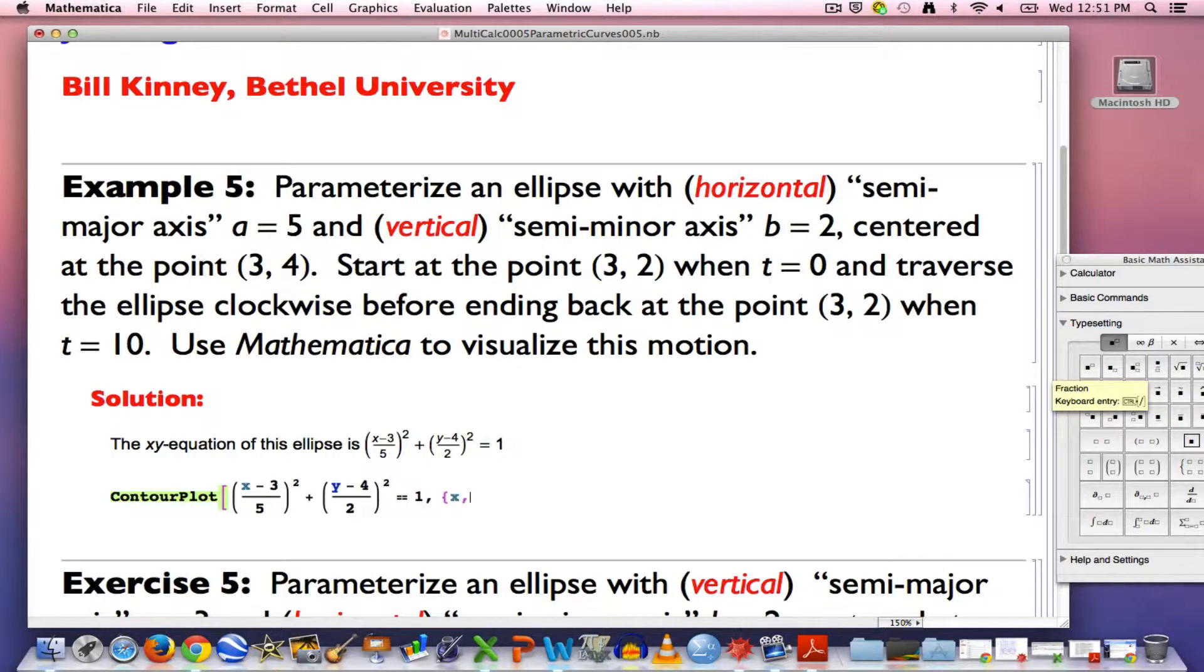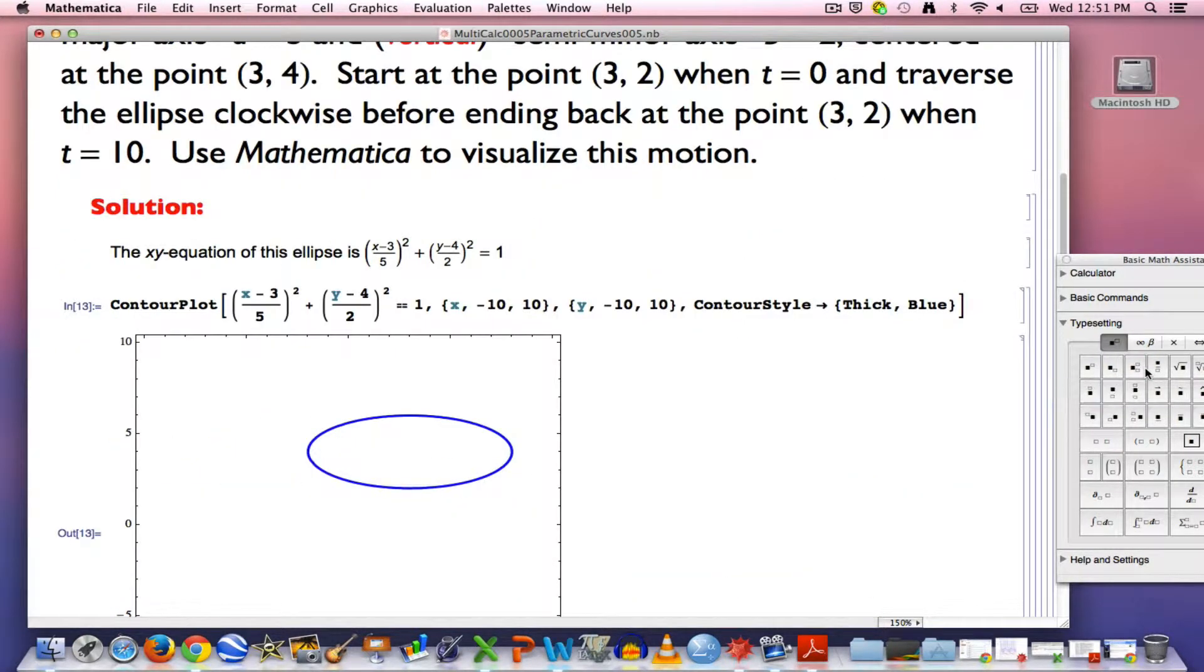Let's plot this where x goes between negative 10 and 10, and y also goes between negative 10 and 10. And let's add some style here, not plot style in this case, but contour style instead. Let's make it thick and blue. Here's a graph that we get.